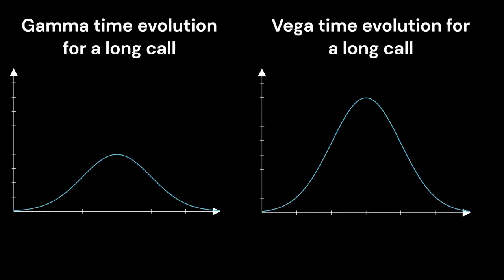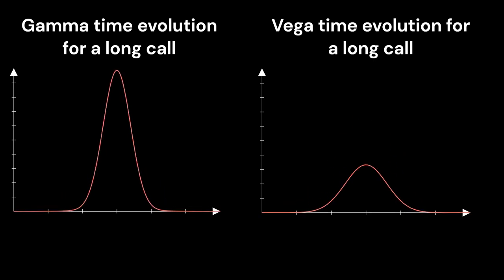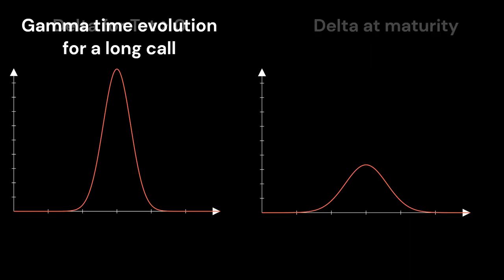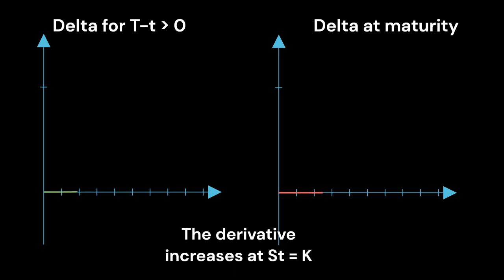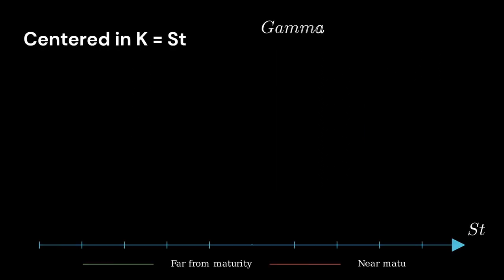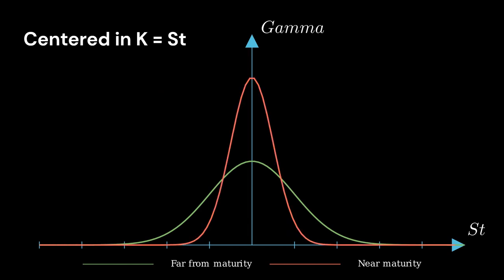For gamma, if we consider a long call, we can see that its value increases around the strike price and tends towards zero in the money and out of the money. The reason for this is that gamma represents the variation in delta. Since delta is the derivative of the option price in relation to the price of the underlying asset, we can see that delta tends towards a binary profile. A binary function has a theoretically infinite derivative at the jump point. Therefore, gamma tends to infinity at the money. So, if we are at the money, a call option with a shorter time to maturity has a higher gamma than the same option with a longer maturity.